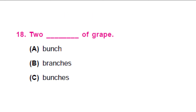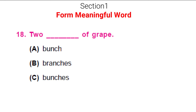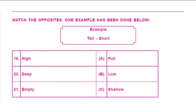Let's see what is next. Two dash of grape — choose the correct word. Would it be bunch, branches or bunches? Well, the clue is 'two' here, so two is a plural — that's why the right answer is two bunches of grape.